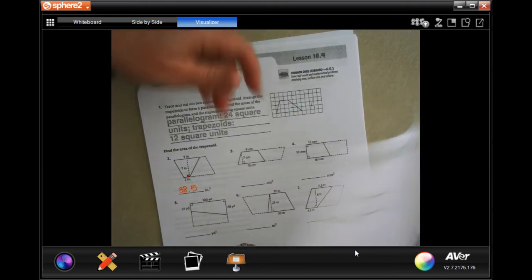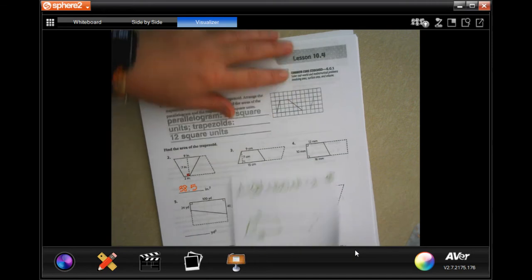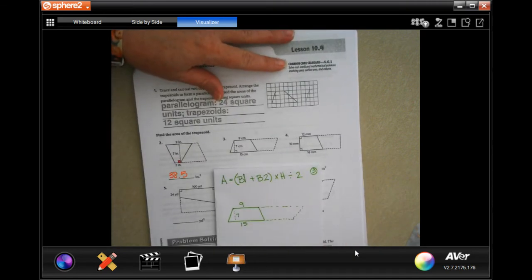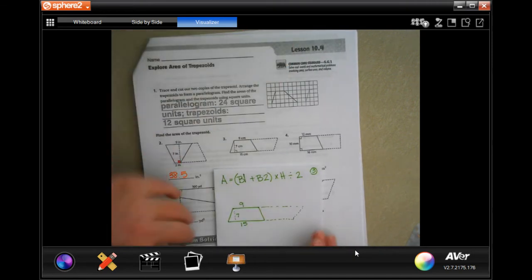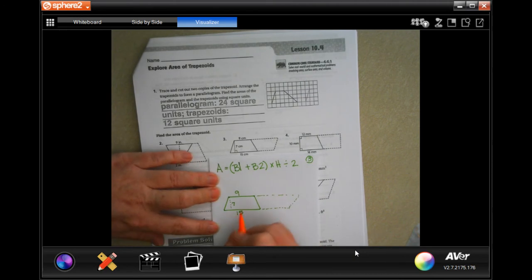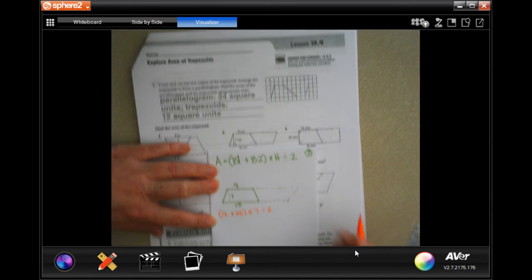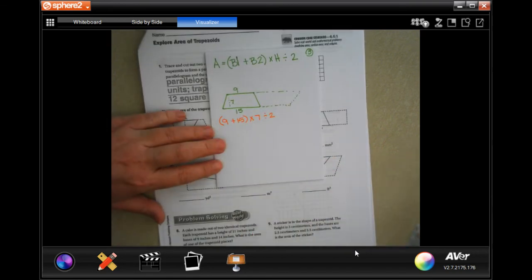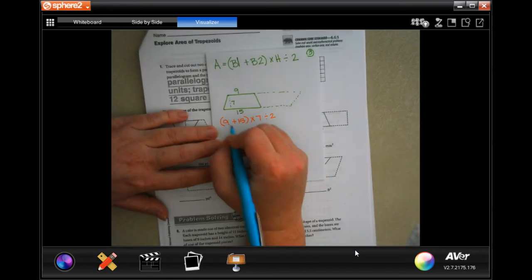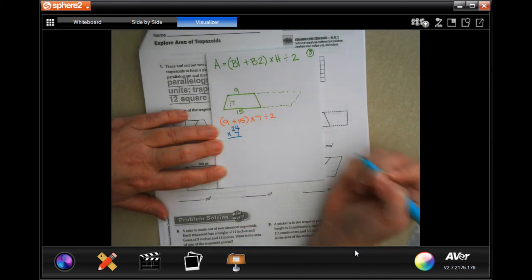All right, let's do number 3. Obviously, again, not to scale, I'm not an artist, I teach math. So base 1 would be 9, base 2 would be 15. We would multiply that by the height, which is 7, and then divide by 2. 9 plus 15, 24. We're going to multiply that by 7.